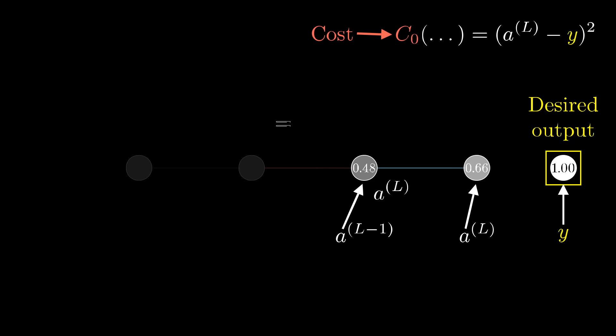As a reminder, this last activation is determined by a weight, which I'm going to call w^l, times the previous neuron's activation, plus some bias, which I'll call b^l. And then you pump that through some special nonlinear function like the sigmoid or relu. It's actually going to make things easier for us if we give a special name to this weighted sum, like z, with the same superscript as the relevant activations.